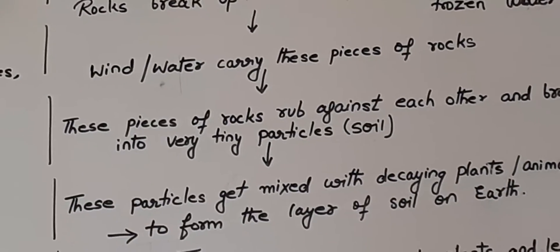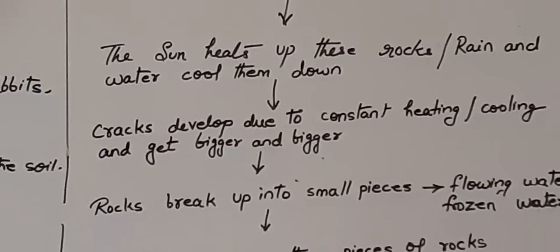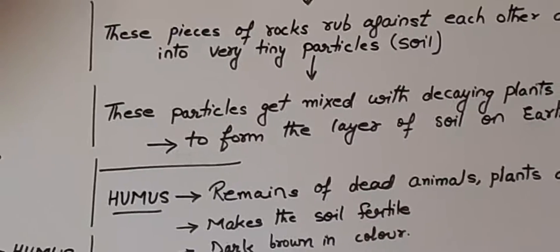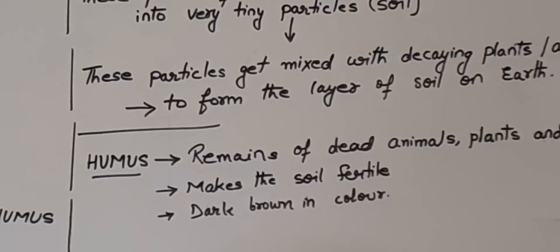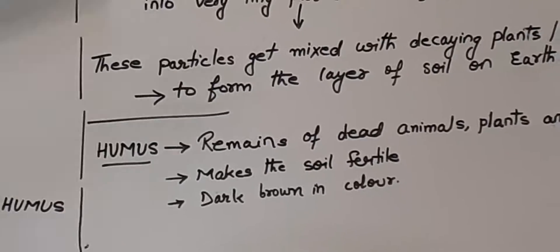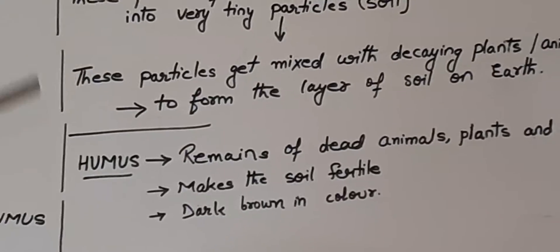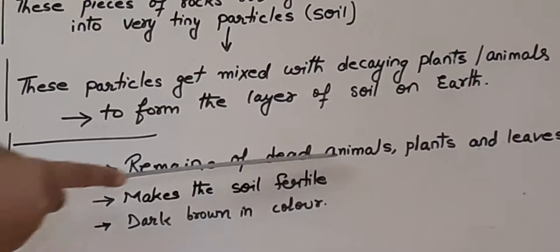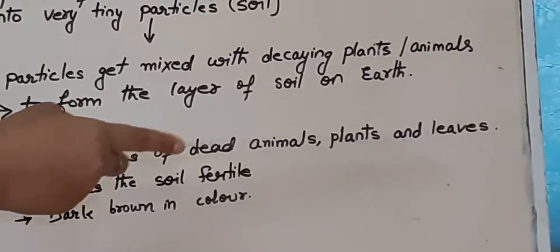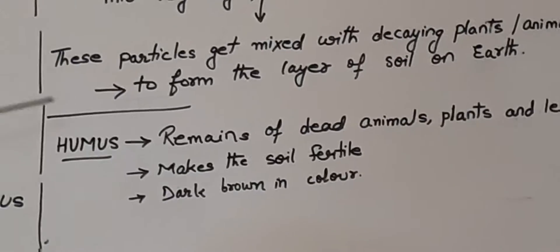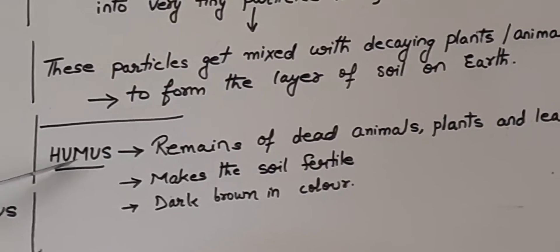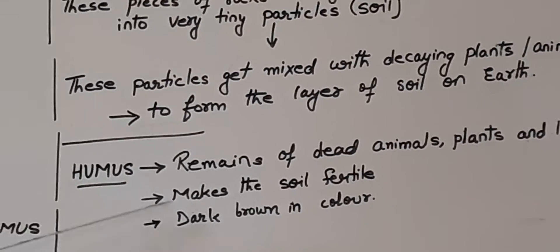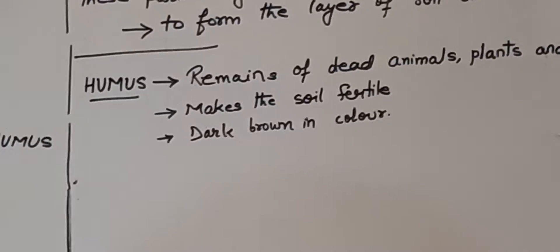Now, during soil formation, we heard the term humus. What is humus? Plants and animals grow in the soil. When these plants and animals die, they decay and form humus. So humus is the remains of dead animals, plants, and leaves. This humus gets mixed with the soil and makes the soil fertile. The humus is basically dark brown or black in color.